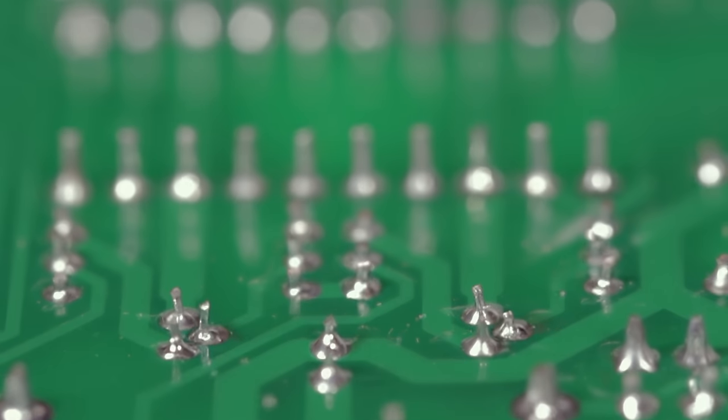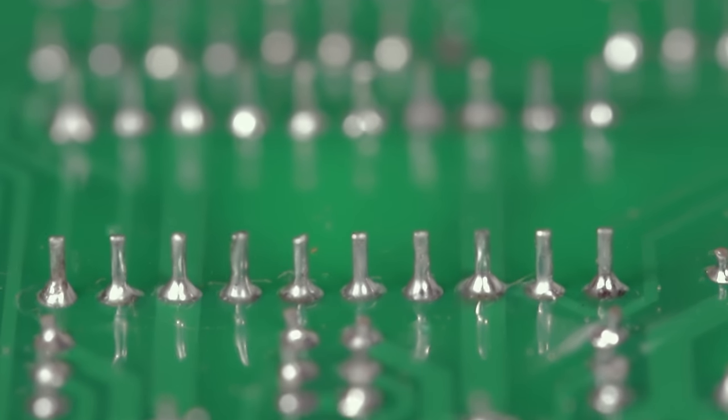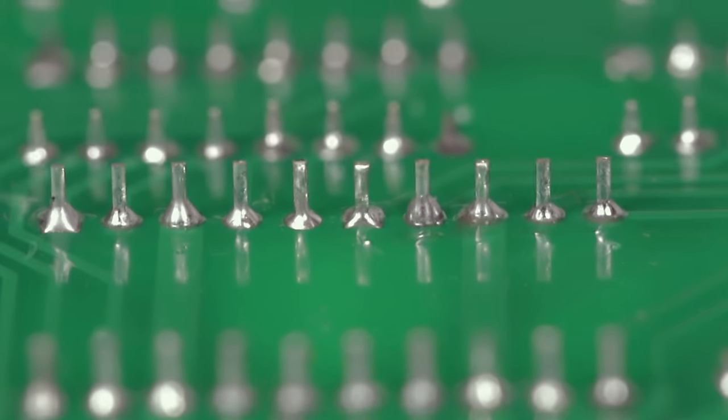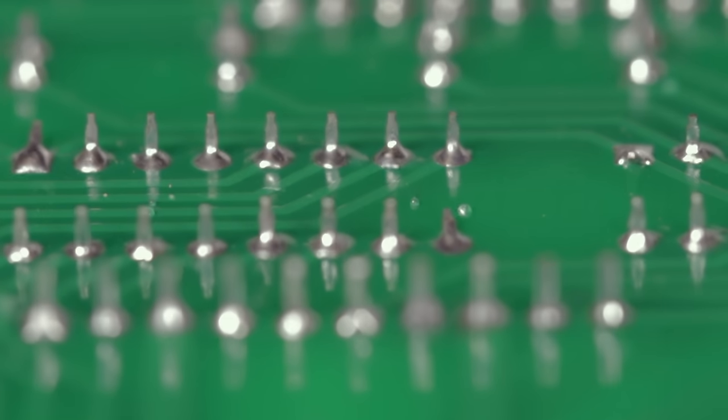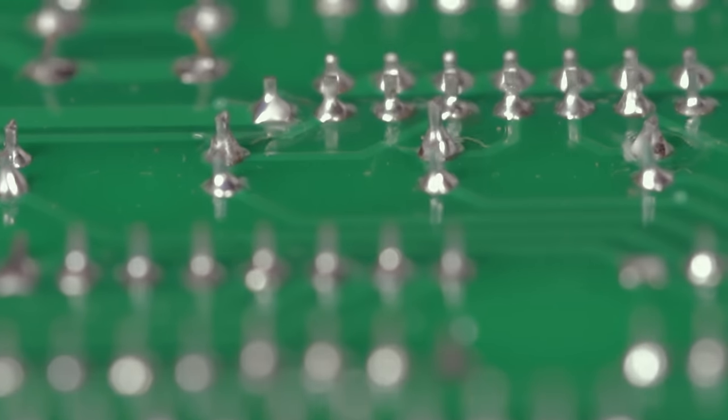An ideal solder should look like a cone with slightly concave sides showing that the solder has flowed through the hole. You can see all the solders here look regular.